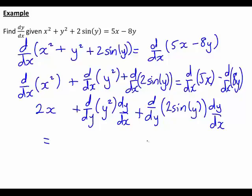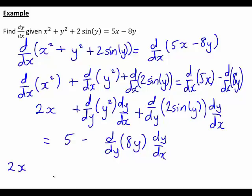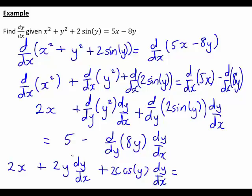Then on the right-hand side, the derivative with respect to x of 5x is just 5. But the last term, the derivative with respect to x of 8y, will be the derivative with respect to y of 8y times dy/dx. So what have we got? We've got 2x plus 2y·dy/dx, plus 2cos(y)·dy/dx, equal to 5 minus 8·dy/dx.